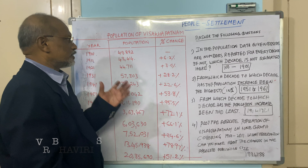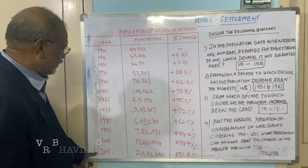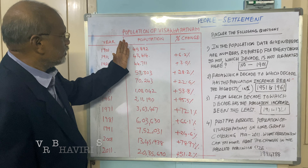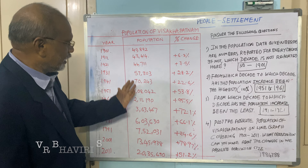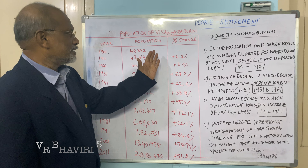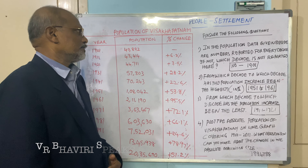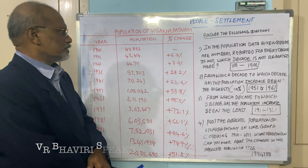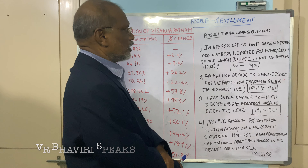If you observe this table from 1901 to 2011, the absolute number of population is given decade-wise, and the percentage change is also given decade-wise. Now let's look at some questions we have to answer.